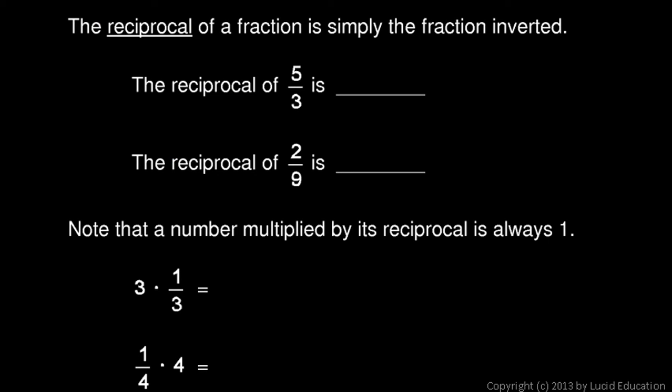Look at this next idea. The reciprocal of a fraction is simply the fraction inverted, so you just flip it over. The reciprocal of 5 thirds is 3 fifths. The reciprocal of 2 over 9 is 9 over 2, and it works that way with every single fraction. The reciprocal of a fraction will be that fraction with the numerator and denominator flipped.